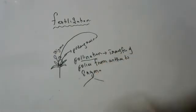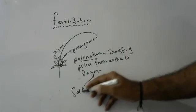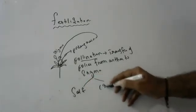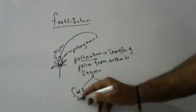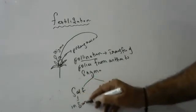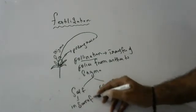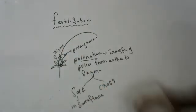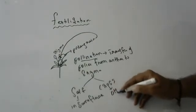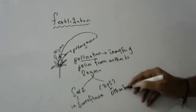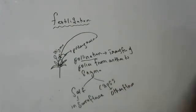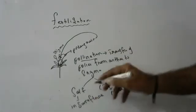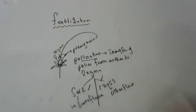There are two types of pollination: self-pollination and cross-pollination. Self-pollination occurs in the same flower. If the pollen falls on a flower of the same variety but a different flower, it is called cross-pollination.